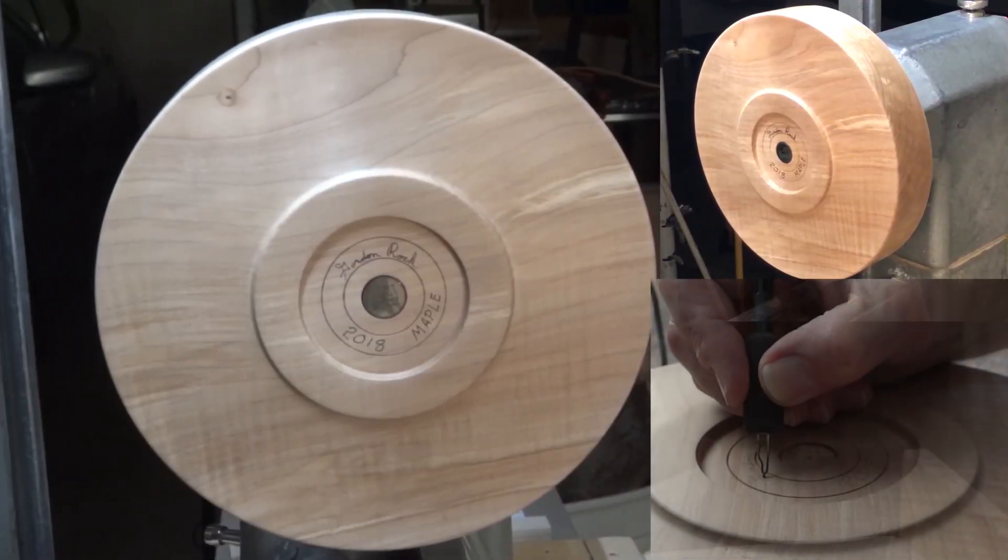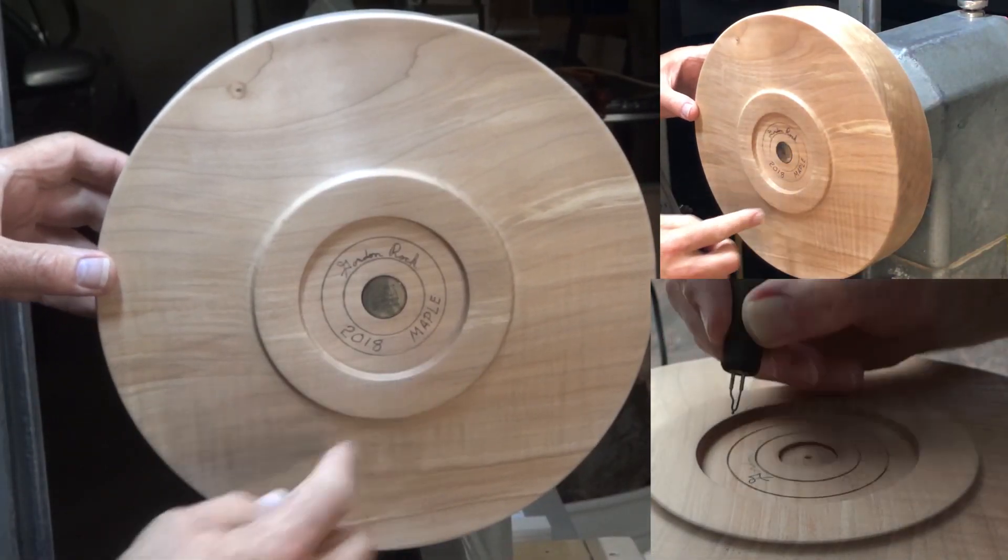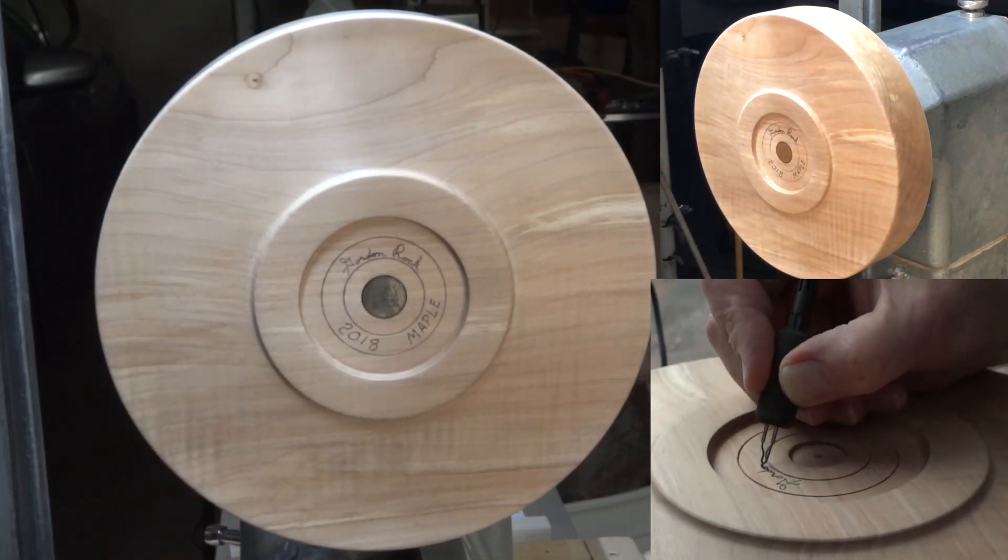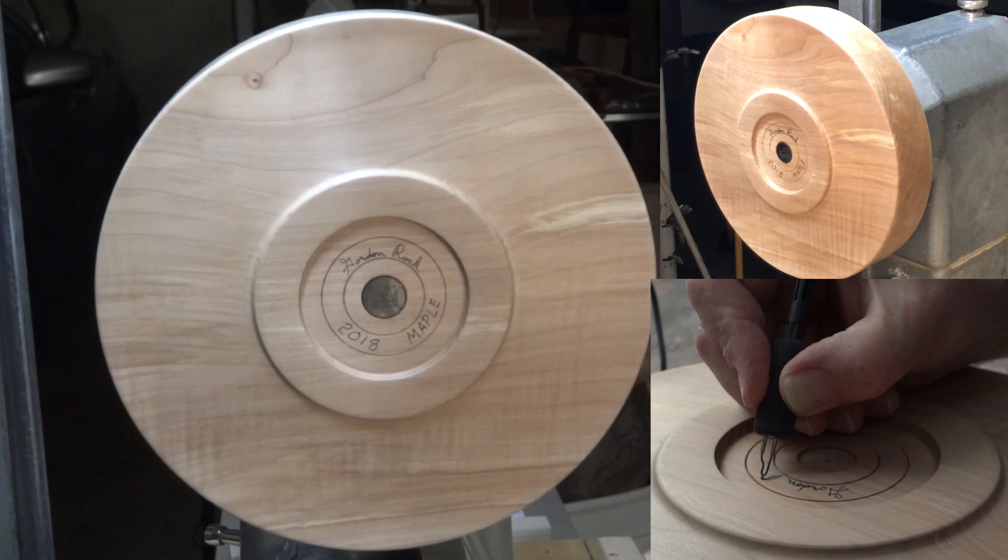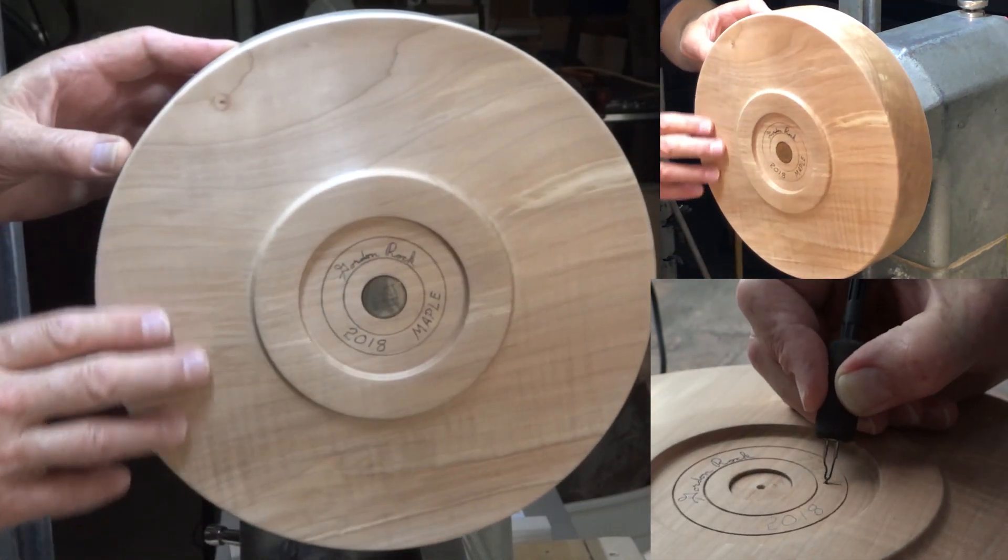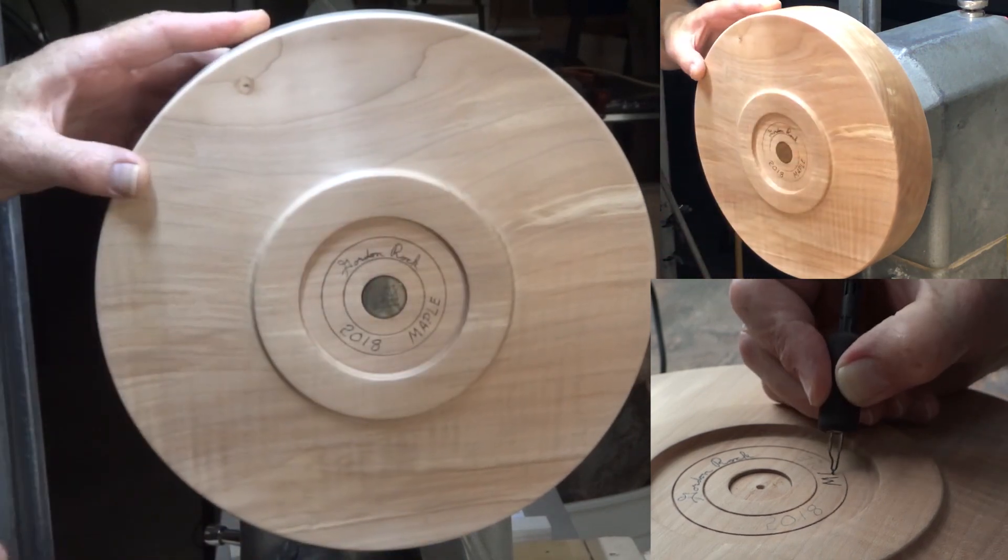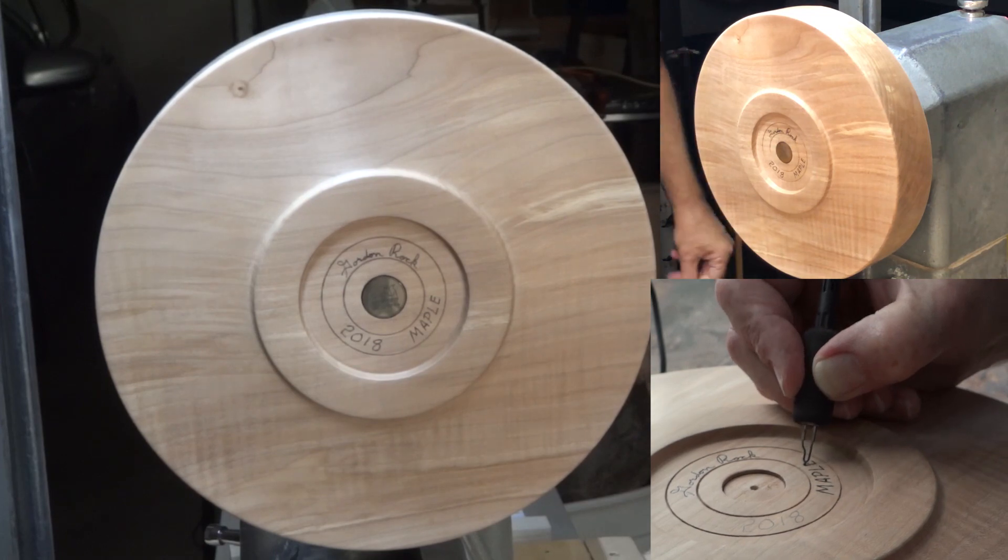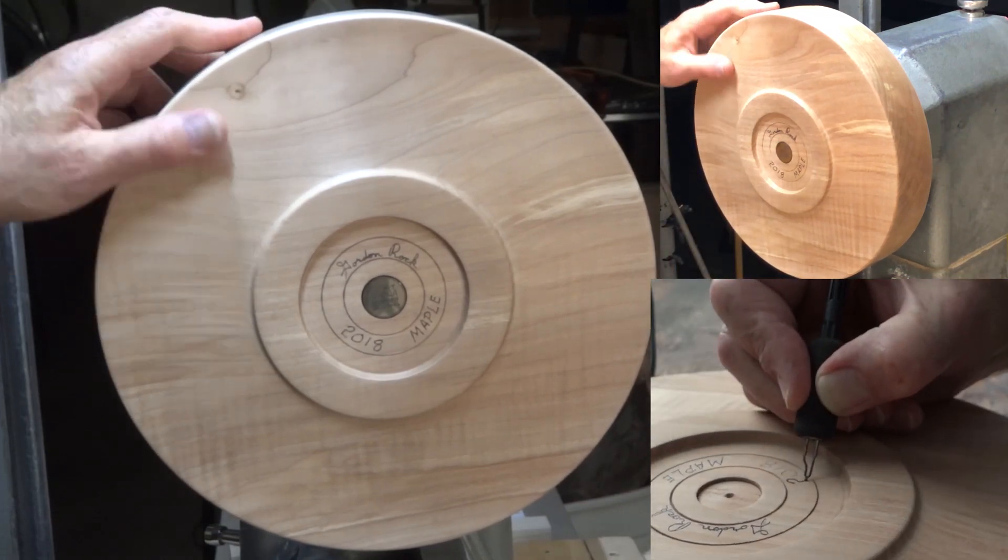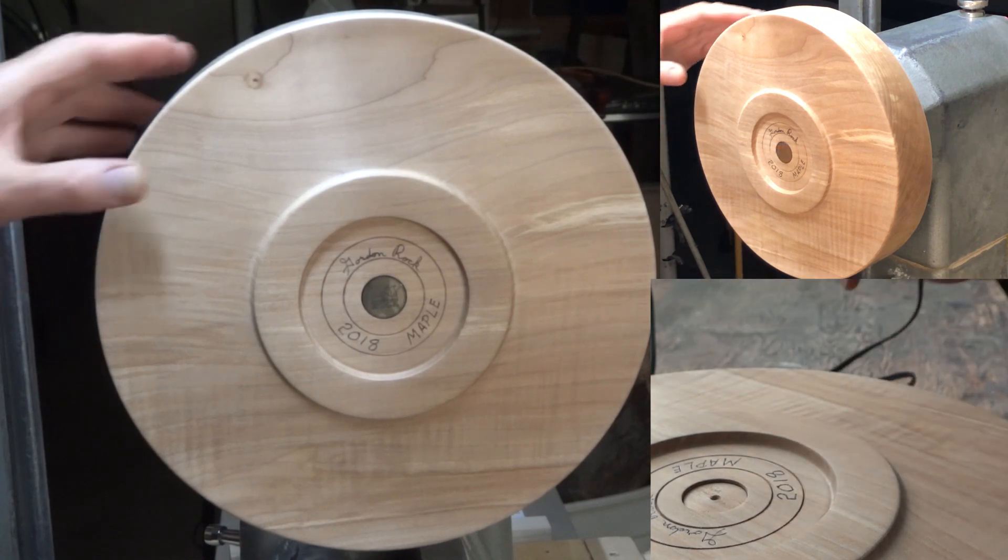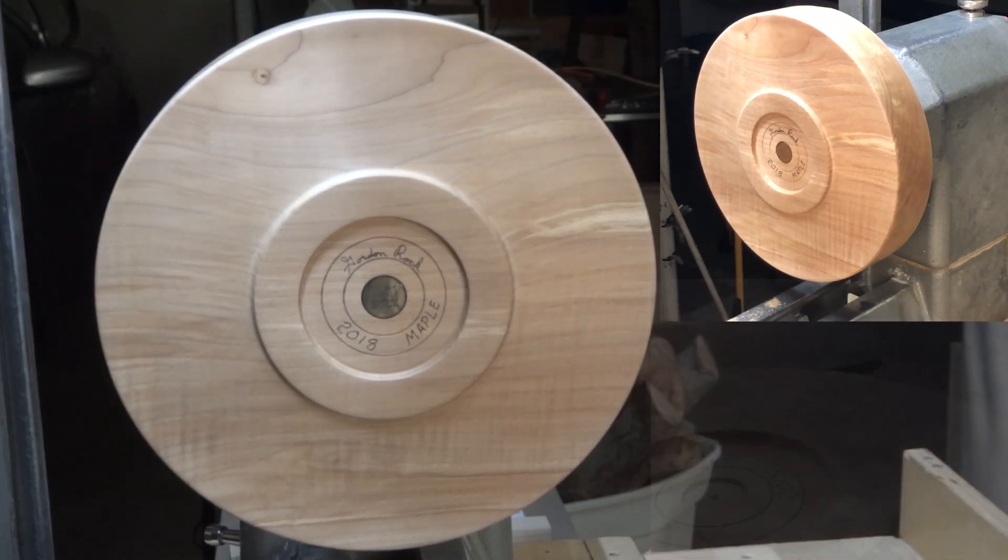I have it signed and dated now, the species identified and my logo coin glued in with cyanoacrylate glue. I'm ready to put a finish on this. I'm going to start with a sanding sealer, a couple of coats. This is sanded to 600 grit, so I'll sand to 600 or 800 after each coat of sanding sealer. And then I'll put the finish on. I'll be back after the sanding sealer.